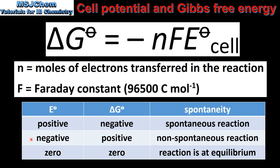If the cell potential is negative, the change in Gibbs free energy will be positive and the reaction will be non-spontaneous. If the cell potential is zero, the change in Gibbs free energy will also be zero and the reaction is at equilibrium.